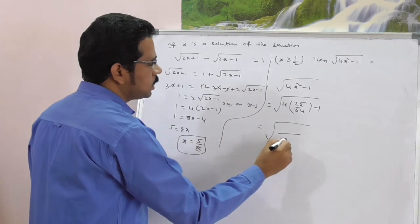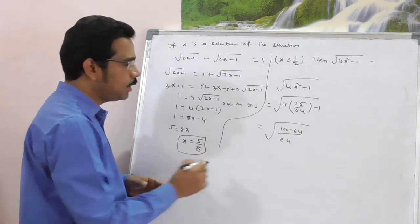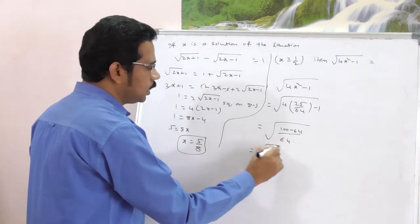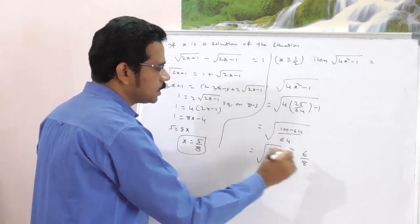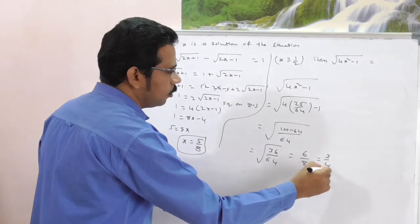Now, here it is. This is equal to the LCM is 64 here. 100 minus 64. 100 minus 64 is 36. 36 by 64, that is square root is 6 by 8. 6 by 8 square root is nothing but 3 by 4.